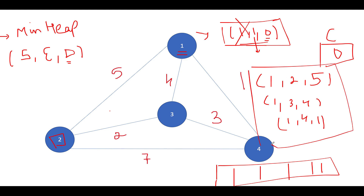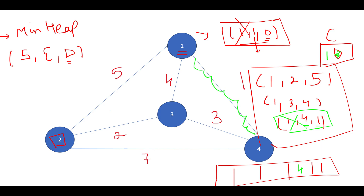We pull out the element with the least distance. Among the entries, the node with distance one — which is (1, 4, 1) — has the least distance, so it's pulled out. We check the ending node, which is four — it's not in the visited set. So we add four to the visited set and update the cost: zero plus one equals one. We've now established a connection between one and four, which will be part of the minimum spanning tree.